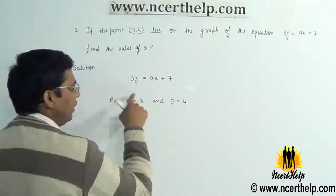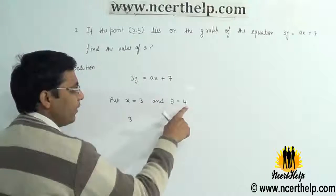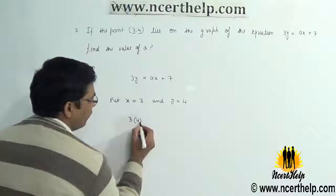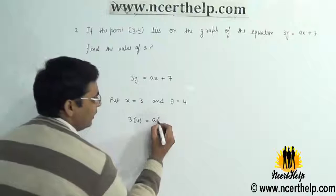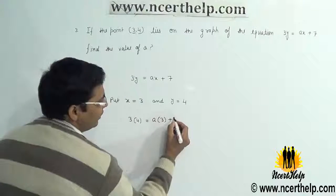Here, 3 times the value of y, y = 4, equals a times the value of x, x = 3, plus 7.